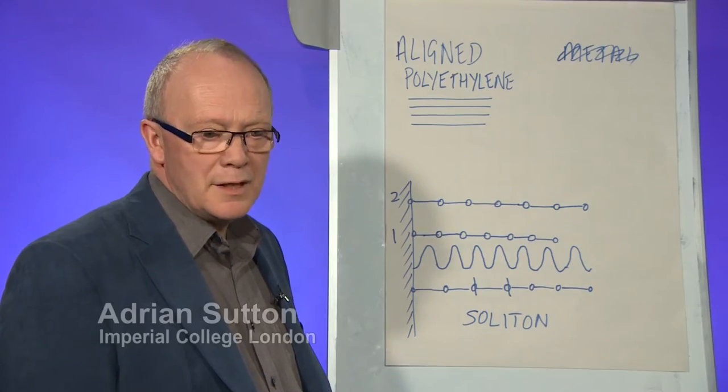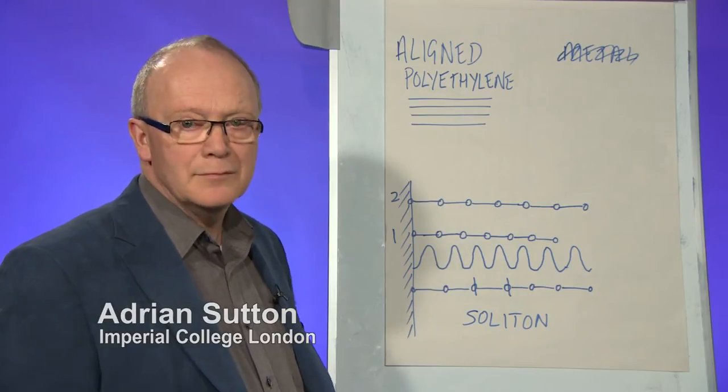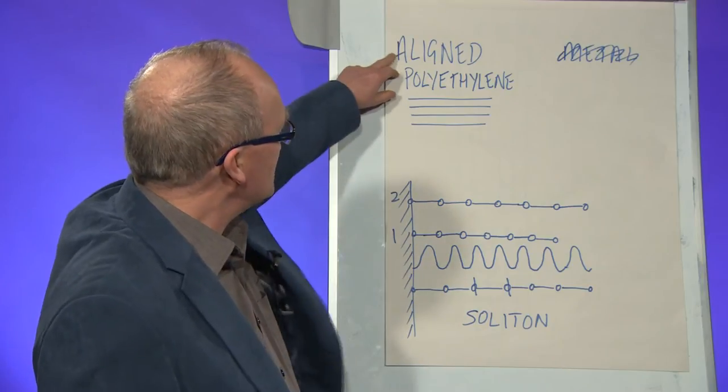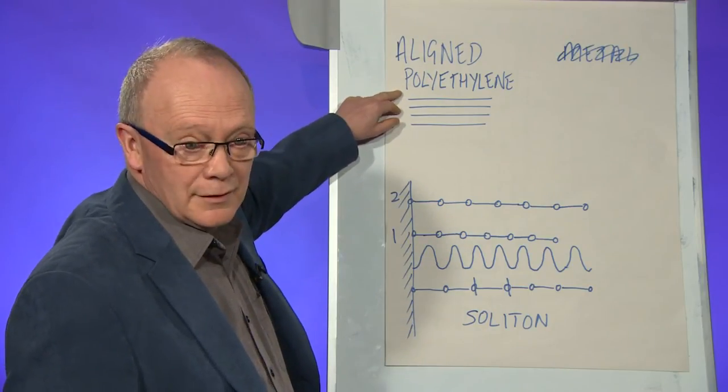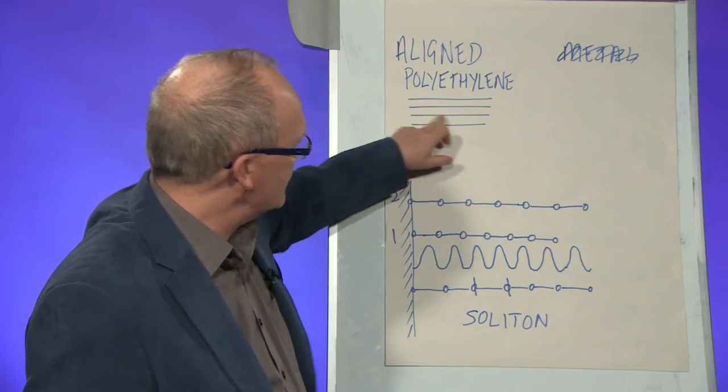Plastic bags are made of polythene. Normally polythene is made of a random mixture of long chain molecules, but it's possible these days to make aligned polythene where all the polymer molecules are parallel to each other.